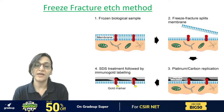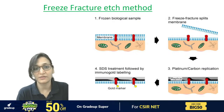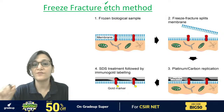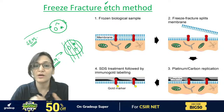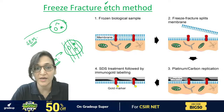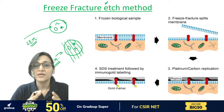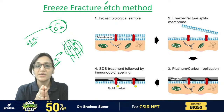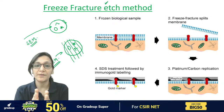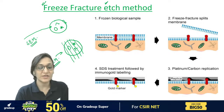There is one more method to mention — the freeze fracture etch method. This is used when we need to observe the structures specifically of the plasma membrane, including the lipid bilayer and structures within it. So the technique we'll use is the freeze fracture etch method.